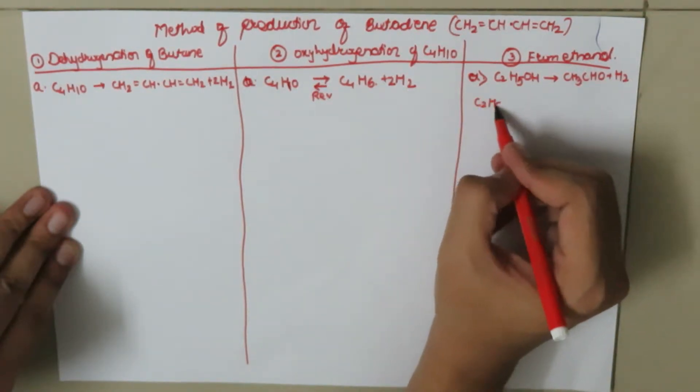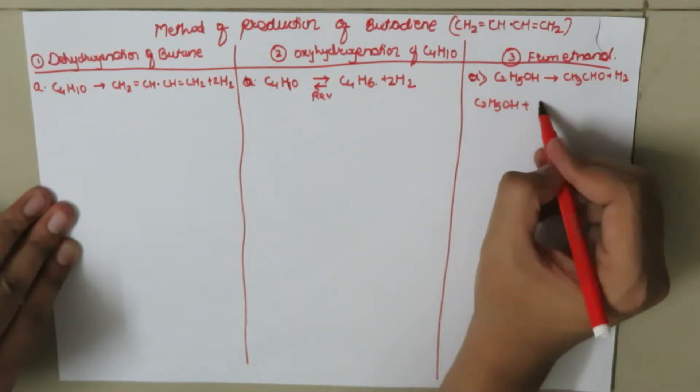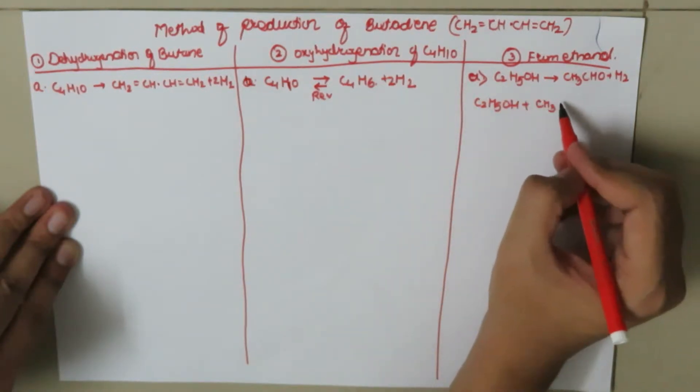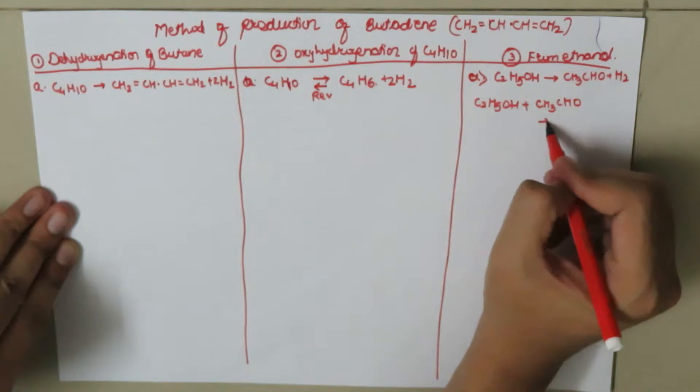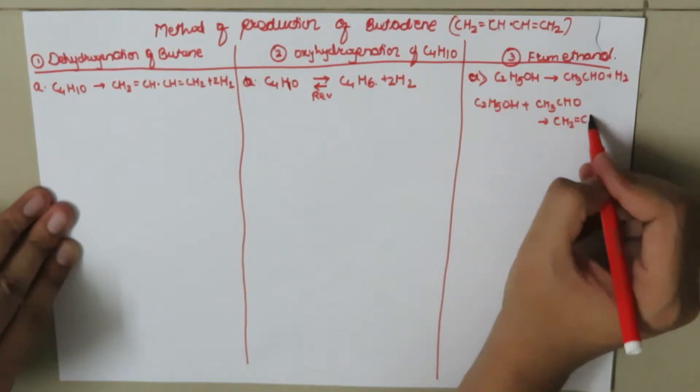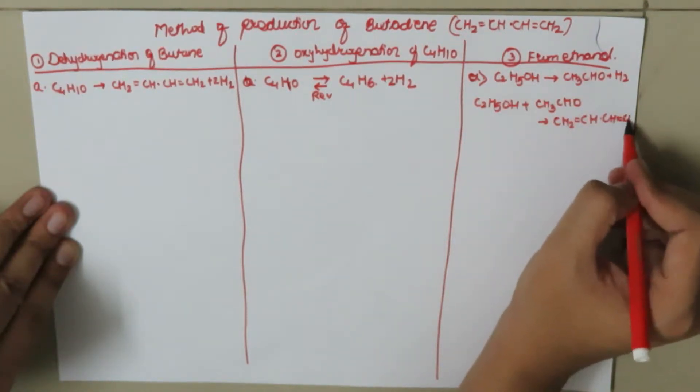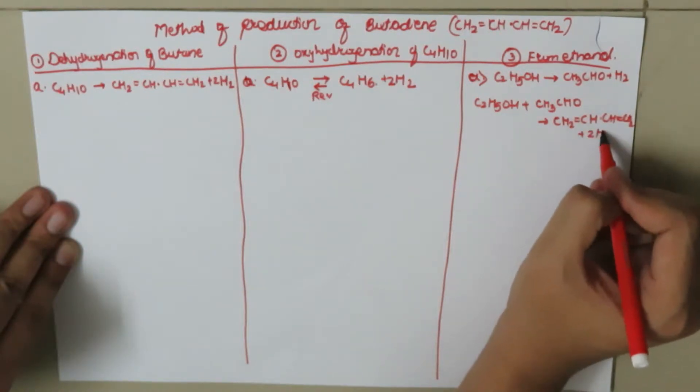Then the excess ethanol C2H5OH will again react with this aldehyde to give us butadiene CH2=CH-CH=CH2 plus 2H2O.